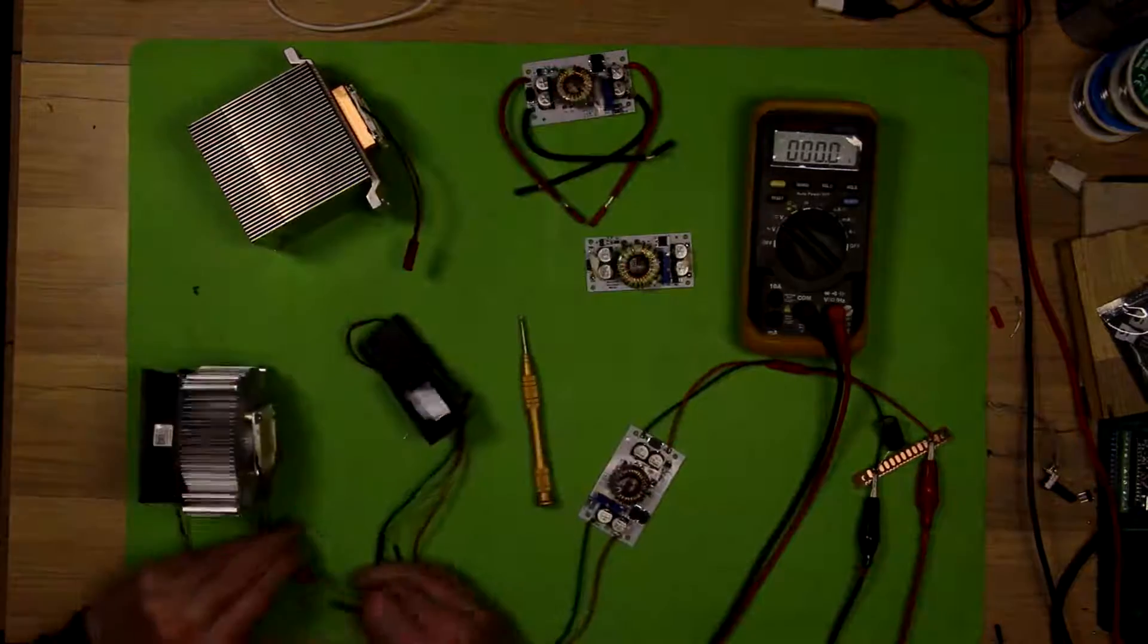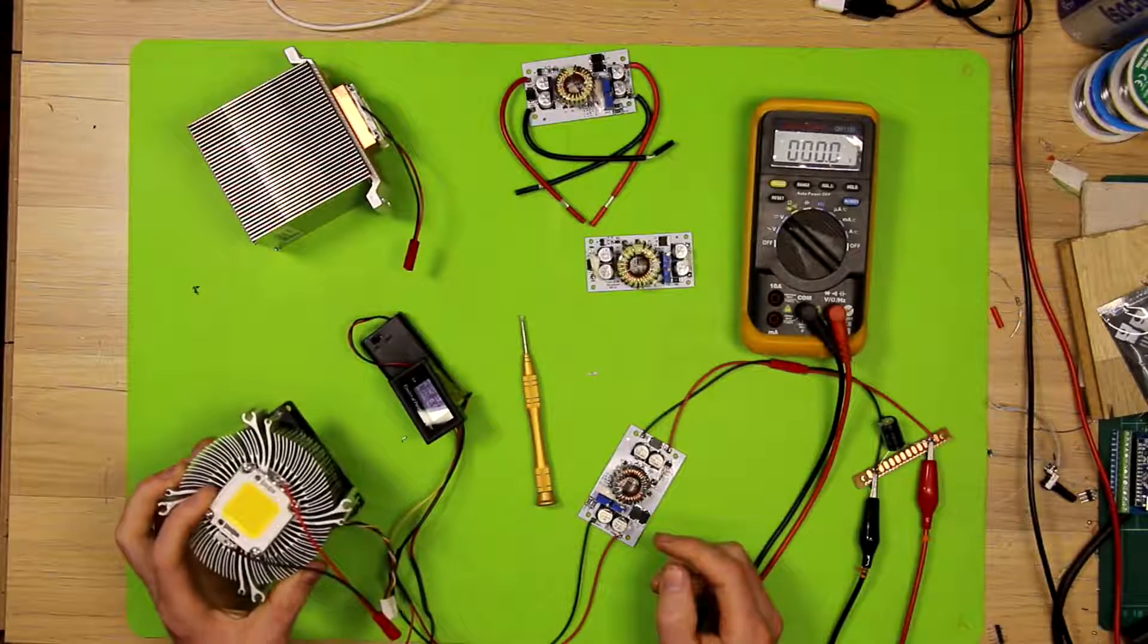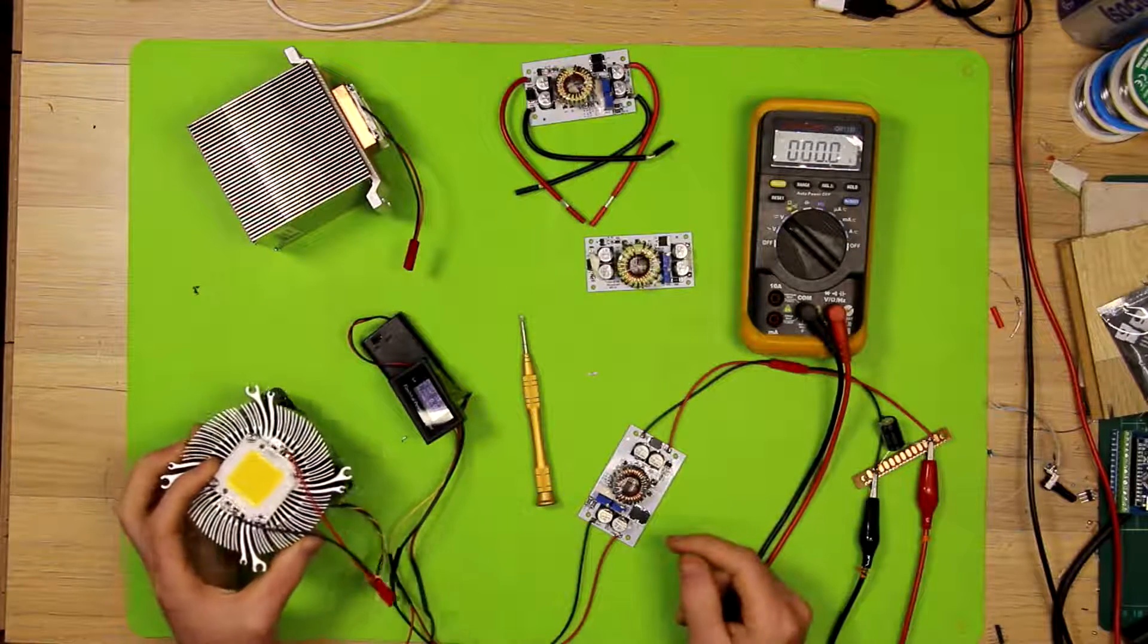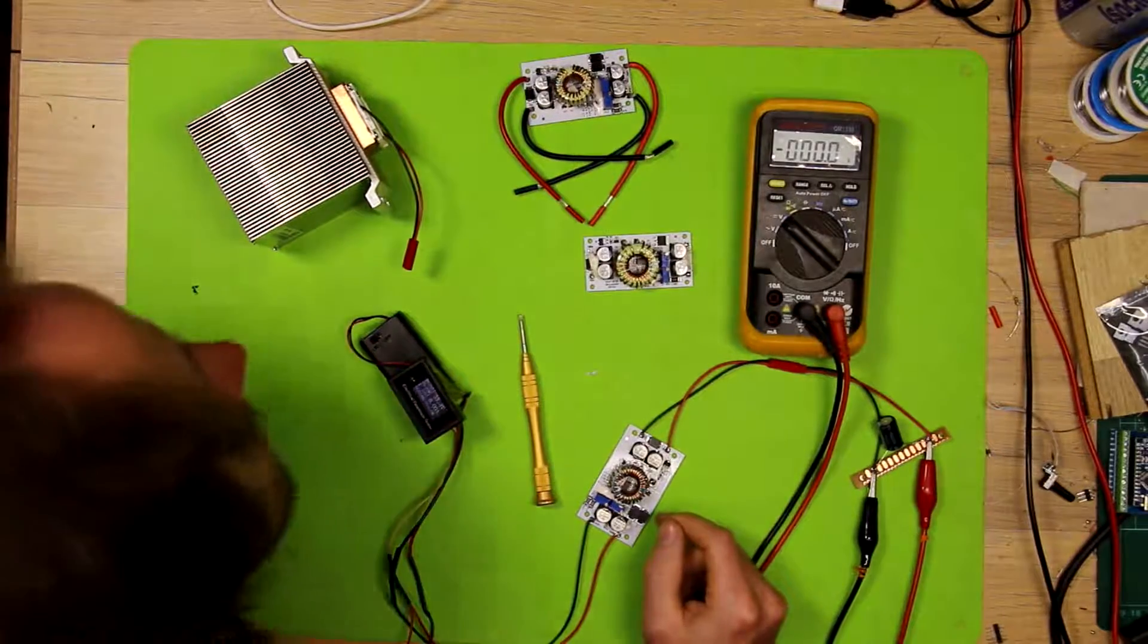So that's at the minimum setting on this potentiometer, which from a previous reading, the minimum setting here we're getting 0.18 amps drawn.